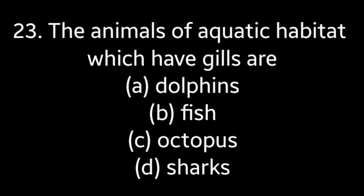Question number 23: The animals of aquatic habitat which have gills are — option A: dolphins, option B: fish, option C: octopus, option D: sharks. Answer is option B: fish.